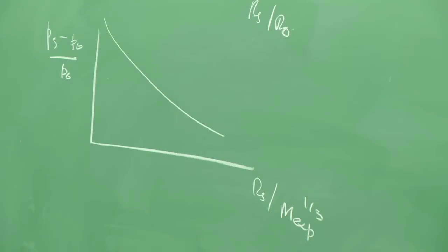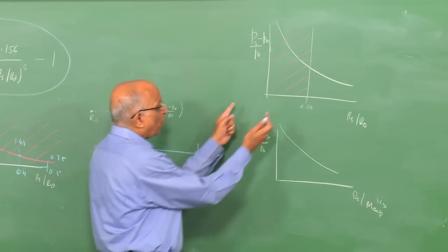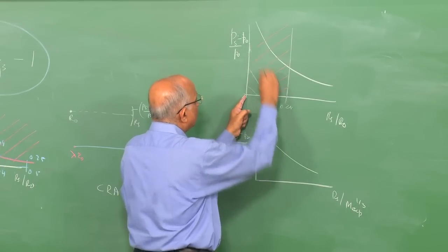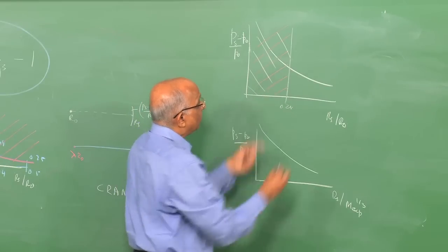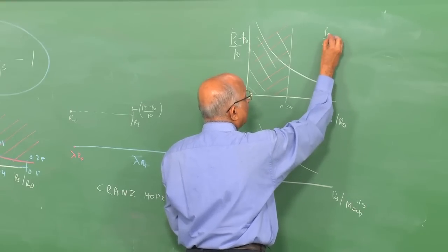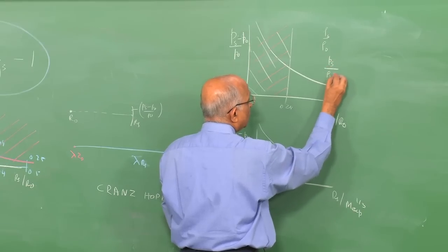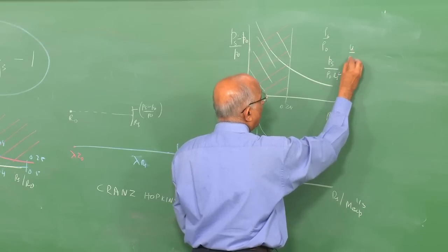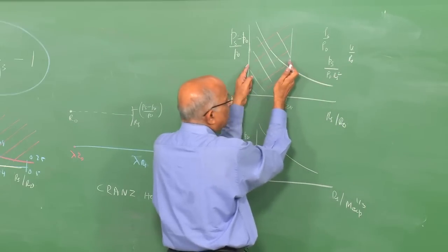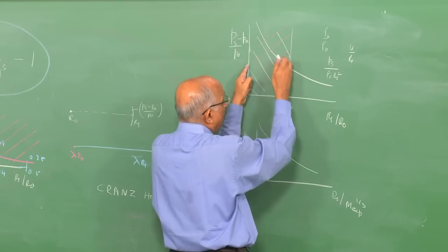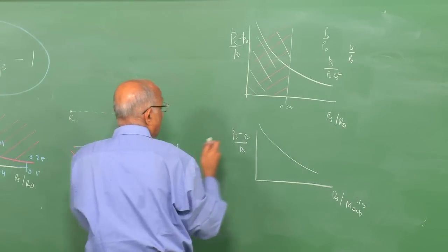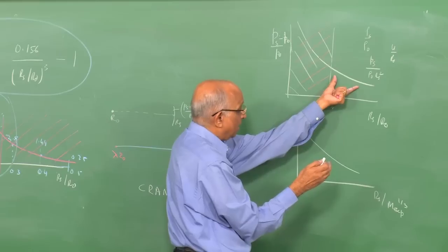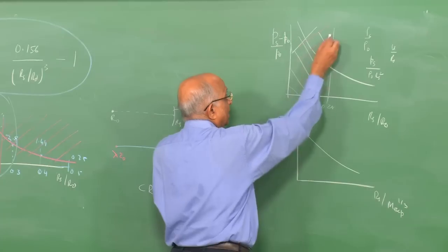The over-pressure curve (Ps − P₀)/P₀ vs Rs/R₀ is valid only in the near field where the blast wave is strong, i.e., within roughly Rs/R₀ ≤ 0.25. Beyond this, the initial internal energy of the medium begins to affect the shock, and the strong-shock integral I ≈ 0.423 is no longer valid. We need to examine under what conditions the initial internal energy becomes significant.